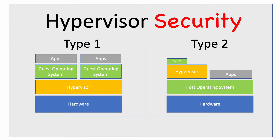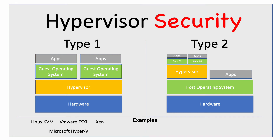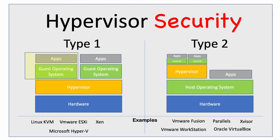You can clearly see that Type 1 lends itself more to a server model, while Type 2 lends itself more to the workstation model. Apps and guest operating systems run on the hypervisor in Type 2. Examples of Type 1 hypervisors include Linux KVM, VMware ESXi, Xen, and Microsoft Hyper-V. Type 2 examples include VMware Fusion, VMware Workstation, Parallels, and Oracle VirtualBox.